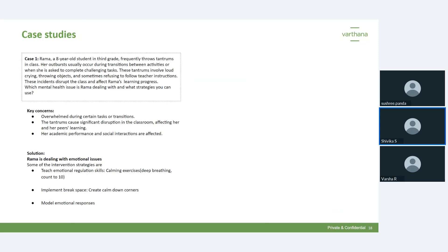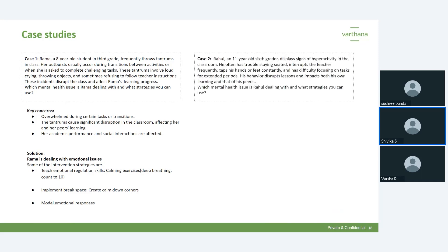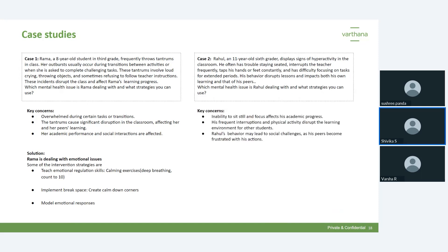The second case study is Rahul, an eleven-year-old sixth grader showing signs of hyperactivity. He often has trouble staying seated, frequently interrupts the teacher, taps his hands or feet constantly, and has difficulty focusing on tasks for extended periods. His behavior disrupts lessons and impacts his own learning as well as that of his peers. Key concerns include inability to sit still, frequent interruptions, and excessive physical activity.